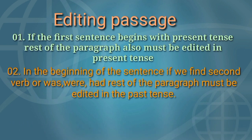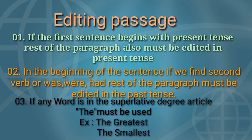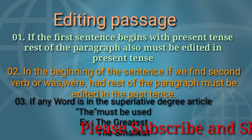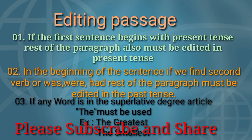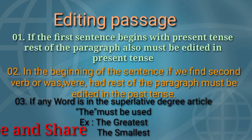Point 2: if in the beginning of the sentence we find a second verb — 'was', 'were', or 'had' — the rest of the paragraph must be edited in the past tense. Point 3: if any word is in the superlative degree, the article 'the' must be used. For example: 'the greatest', 'the smallest'.